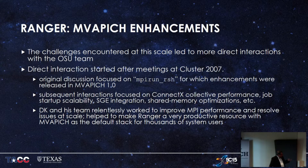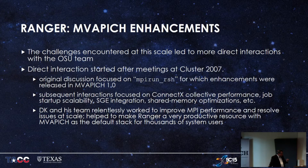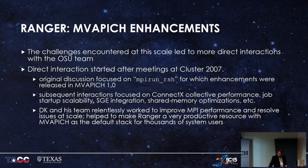Starting at Cluster 2007, which happened to be in Austin, DK came down and met with Carl and Tommy. We started thinking about job launch, since MVAPICH has always had a huge advantage in job launch over everything else. Then we moved on to looking at the ConnectX cards and tuning collectives, because we went from dual-core dual-socket nodes to quad-core quad-socket nodes, and had to deal with intranode bandwidth and tuning.